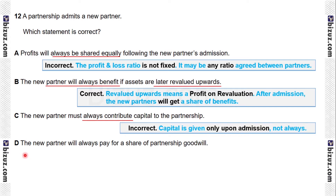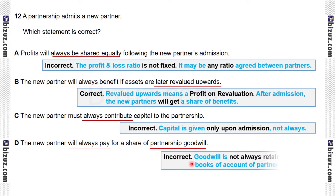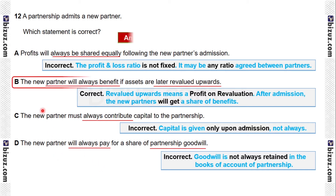Option D: the new partner will always pay for a share of partnership goodwill. This is also incorrect because goodwill is not always retained in the books of account of a partnership, so the new partner may not always pay for partnership goodwill. Our answer is represented by option B.